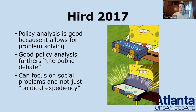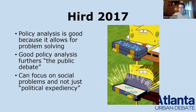The first piece of 2AC evidence is Heard in 2017, your framework evidence. Heard is essentially saying that policy analysis in the context of public health is actually very useful because it allows for targeted problem solving — we can take specific actions to solve individual problems — and that doesn't necessarily prevent a focus on broader social issues. Policy analysis can be both useful and can lead to broader discussions, furthering the public debate about a particular set of issues.